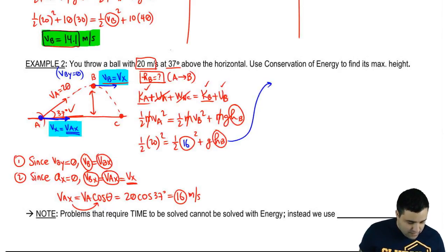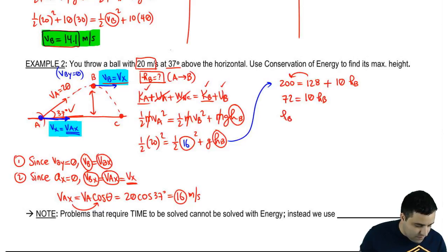This is going to be 400, 200. This is 256 divided by 2. This is going to be 128 plus 10 HB. If I move this over here, I'm going to get 72 equals 10 HB. So, HB equals 7.2 meters. That's it for this one.